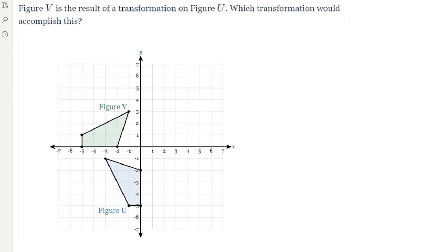Figure V is the result of a transformation of figure U. So figure V is a result. That means figure U is the original one. I'm just going to put a star. Anytime you see a star in a shape, that means that's the original one. Can it be a reflection?